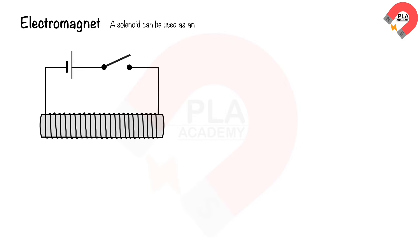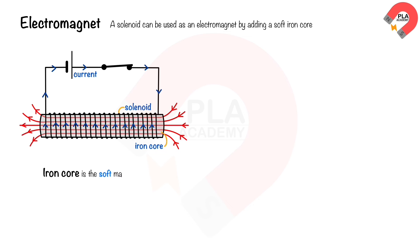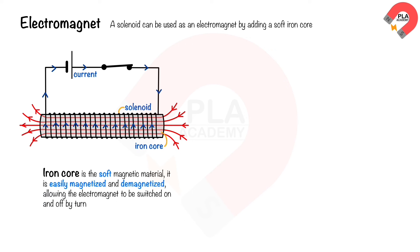The electromagnet: a solenoid can be used as an electromagnet by adding a soft iron core. The iron core becomes an induced magnet when current flows through the solenoid, and the combined magnetic field creates a much stronger magnet overall. Iron core is a soft magnetic material — it is easily magnetized and demagnetized, allowing the electromagnet to be switched on and off by turning the current on and off.